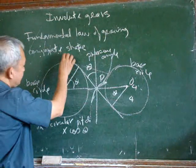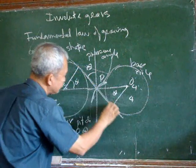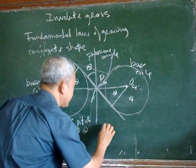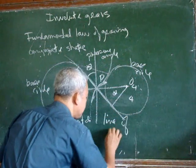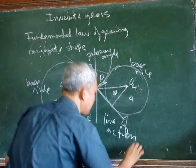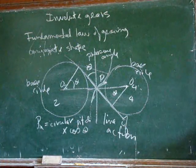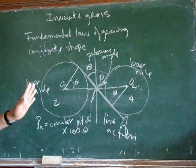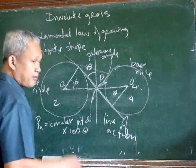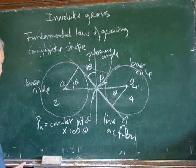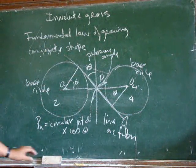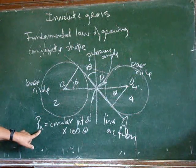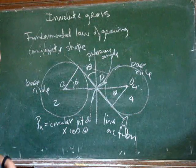Now this line, which is tangent to the two base circles, will be now referred to as the line of action. That line of action will tell us the length, the path of contact of the two gears. We must remember that the normal pitch is equal to the circular pitch multiplied by cosine theta.